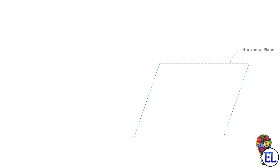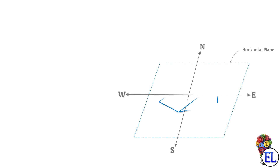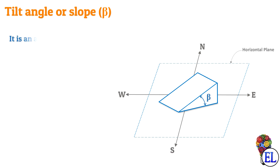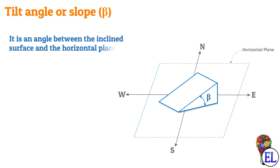Now let us move to something more tricky. As it is not always possible to have a horizontal plane everywhere on the earth's surface, we need to define the remaining angles related to an inclined surface. Considering an inclined surface on the horizontal plane — since it is inclined, it will have some angle with the horizontal surface. This angle is known as the tilt angle or slope, denoted by beta, and is simply defined as the angle between the inclined surface and the horizontal plane.